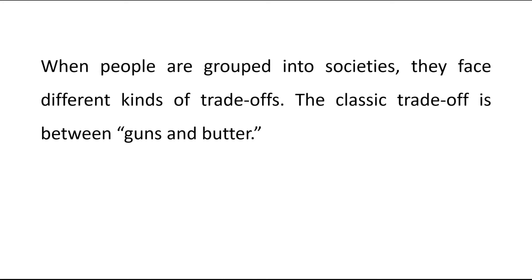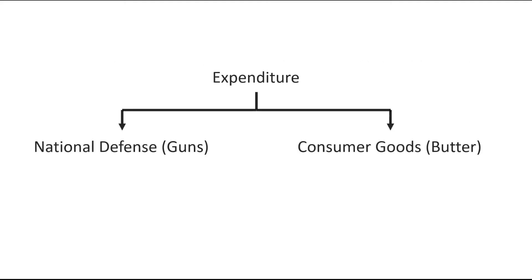When people are grouped into societies, they face different kinds of trade-offs. The classic trade-off is between guns and butter — the more a society spends on national defense, the less it can spend on consumer goods.